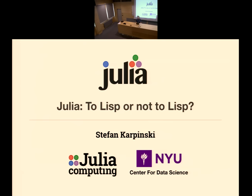I entitled this somewhat whimsically 'Julia: to Lisp or not to Lisp.' People have thrown around claims that Ruby is an adequate Lisp and JavaScript is really basically Lisp. Julia was very much inspired by Lisp, specifically Scheme, but also other varieties of Lisp. I'm not going to do a point-to-point comparison — I'll just talk about interesting features and you can see the similarities and differences yourselves.